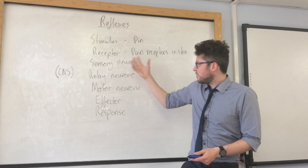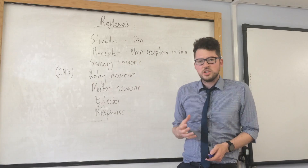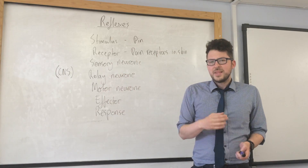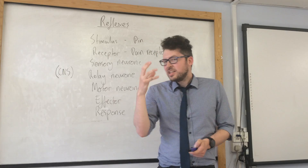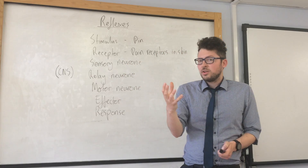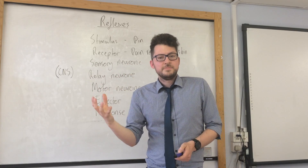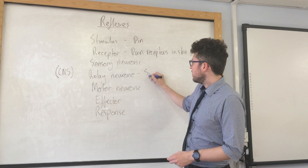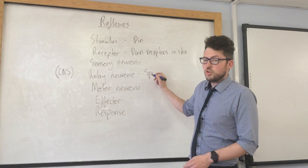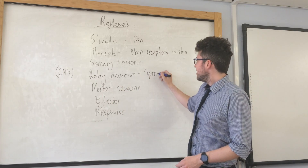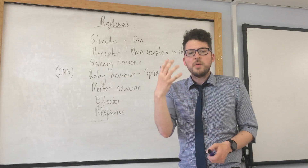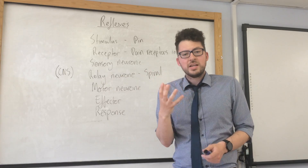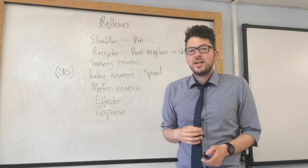The next step is to be passed via the sensory neuron to the relay neuron. Now here's the key difference: in other responses, this went to the brain. However, in this example, it goes to the spinal cord. It's important that it goes to the spinal cord because this allows the response to be much quicker than if it went to the brain.